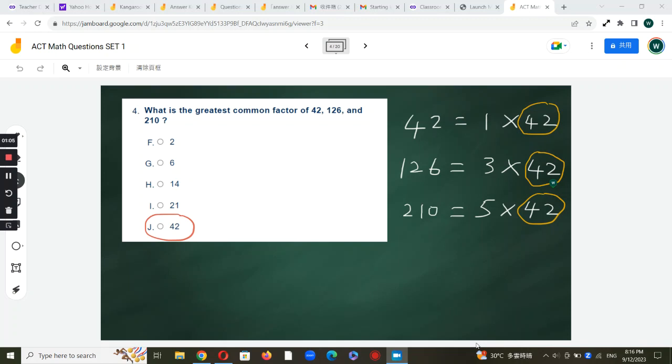210 is 5 times 42, so obviously 42 is the common factor and which is also the greatest one.